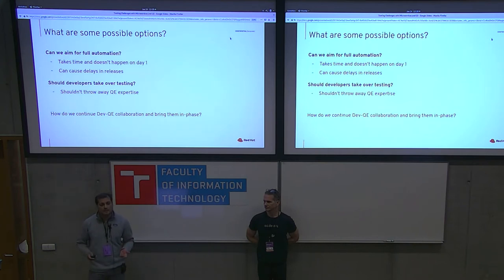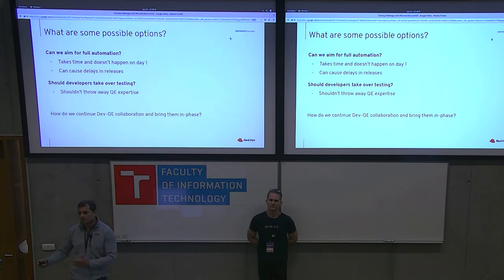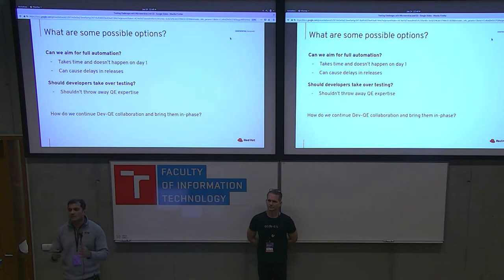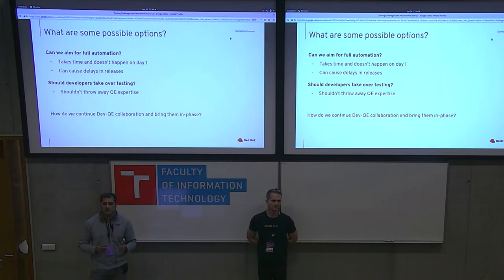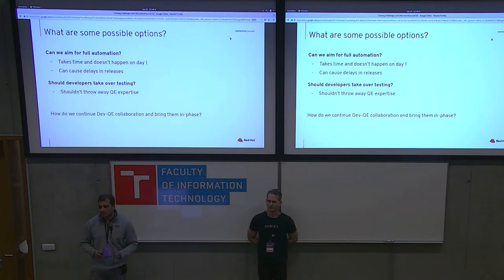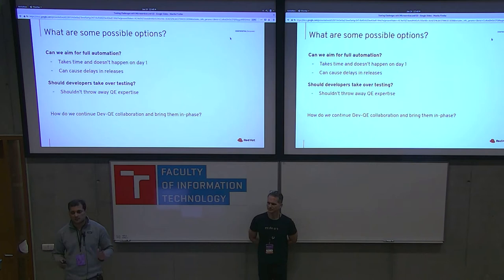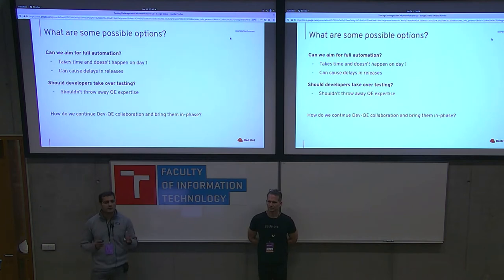Should developers take over testing? Developers are already implementing unit tests and other integration automation. Can they pick up the full slack and combine QE and developers into one team? Well, there's a reason why developers don't review their own code — we're not good at finding our own bugs. No matter how good the code you write, no matter how many automated tests you write, you put it in front of QE and they will find bugs. So the general idea is you shouldn't throw away years of QE expertise that teams have built. We should still try to leverage that. So how do we leverage QE expertise but still get them more in phase with the development process?